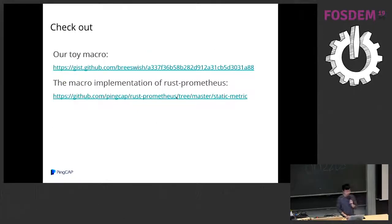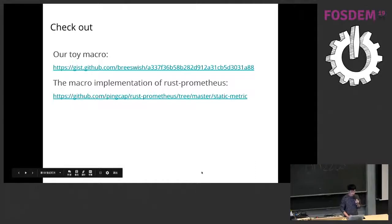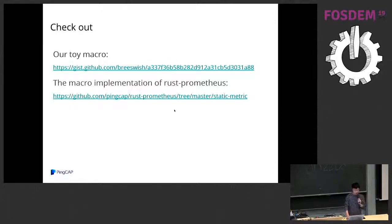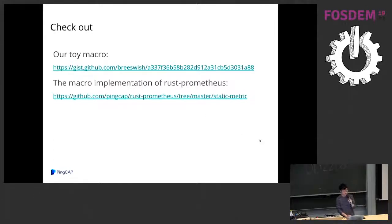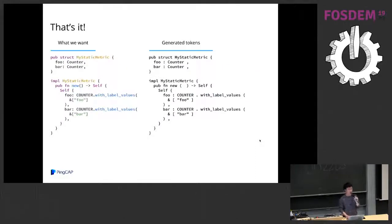For more information, you can check out these two links: a gist for a minimal macro example, and the full implementation in Rust Prometheus. The full implementation is complex because the macro supports many functionalities with a very powerful syntax. But the core idea is similar: first parse the token stream, manipulate the data, and finally generate a new token stream.